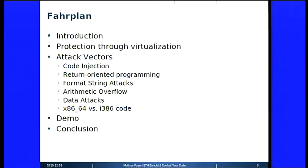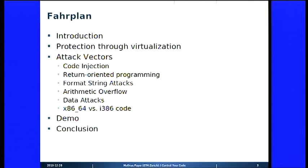The talk outline is as follows: first, I will introduce the surroundings of the talk and discuss protections through virtualization, how we can solve the security problem by adding an additional security layer. Then I will discuss different attack vectors: code injection, return-oriented programming, format string attacks, arithmetic overflows, data attacks, and mixing different forms of machine code, especially x86-64 versus i386. In the end, I will do a short demo and conclude.